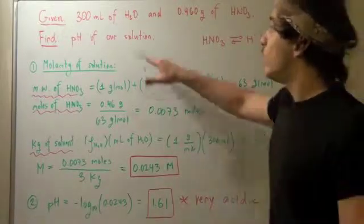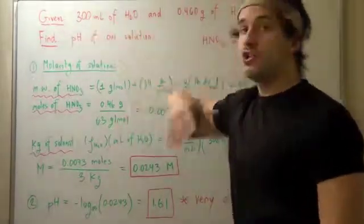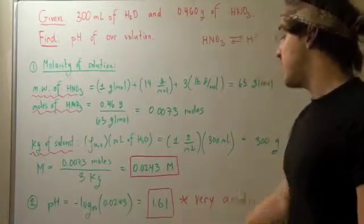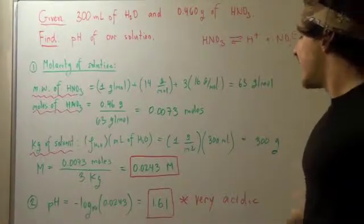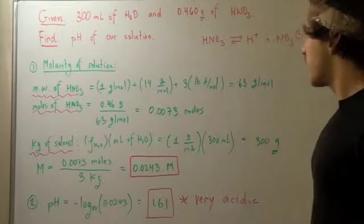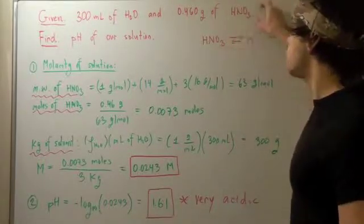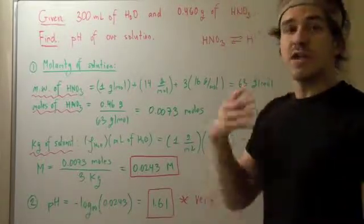So clearly, it went from a pH of 7, neutral, to a very low pH of 1.61. This means it's a very acidic solution, and that's because this is a very strong Bronsted-Lowry acid.